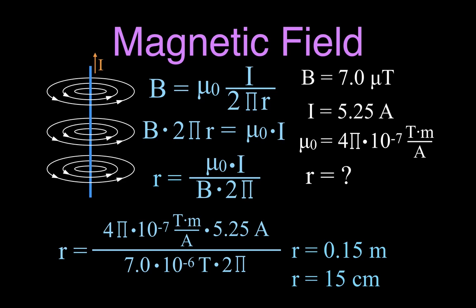That's a quick video covering three different examples for calculating magnetic field-related quantities: we calculated magnetic field strength, we calculated the current, and we calculated the radius r. I hope you found that helpful.